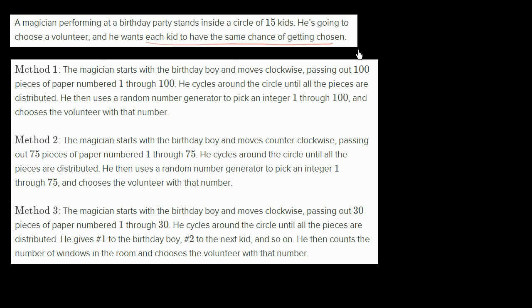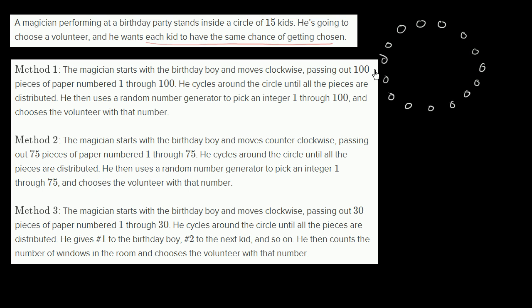So let's think about what's happening. There are 15 kids in a circle — 1, 2, 3, 4, 5, 6, 7, 8, 9, 10, 11, 12, 13, 14, 15. So 15 kids in a circle.